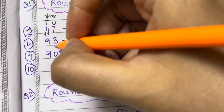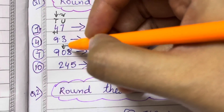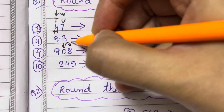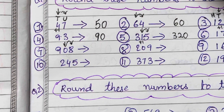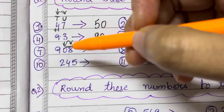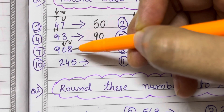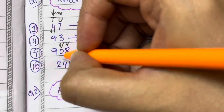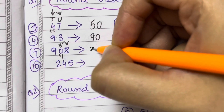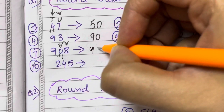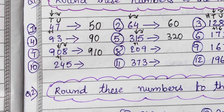908. The tens place is 0, but you need to check the digit after that. The digit after that is more than 5, so you add plus 1. And 0 plus 1 is 1. So 9 is as it is, then 1, and in place of 8 it is replaced by 0. That gives 910.